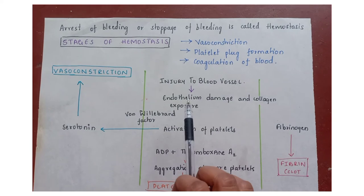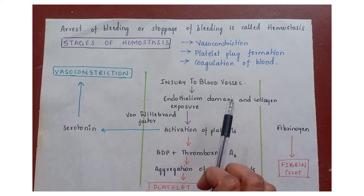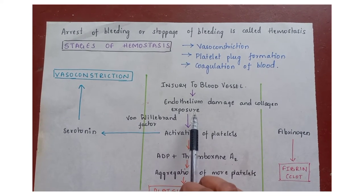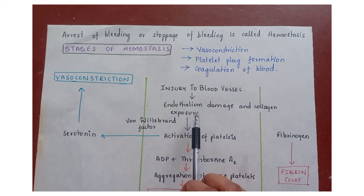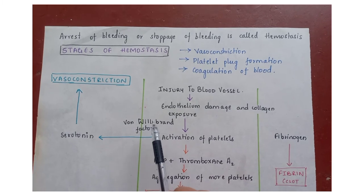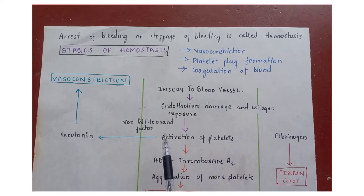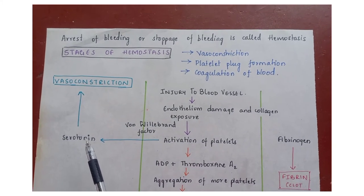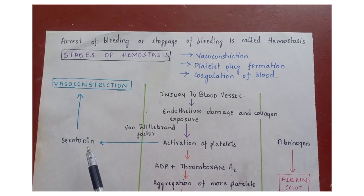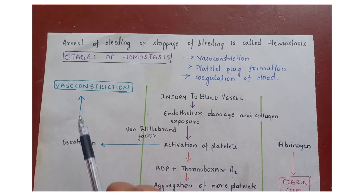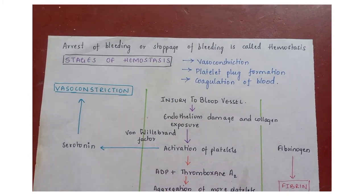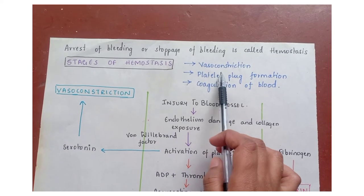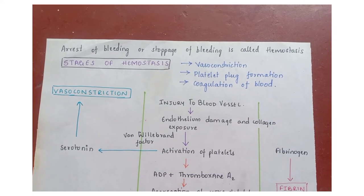Whenever there is injury to blood vessels, the endothelium is damaged and collagen is exposed. The platelets then come and attach to the damaged endothelium, and this is accelerated by von Willebrand factor. These activated platelets secrete serotonin, which causes vasoconstriction.